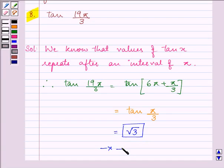And the value of tan(π/3) is equal to what? Exactly. It is equal to √3. So, this is our final answer.